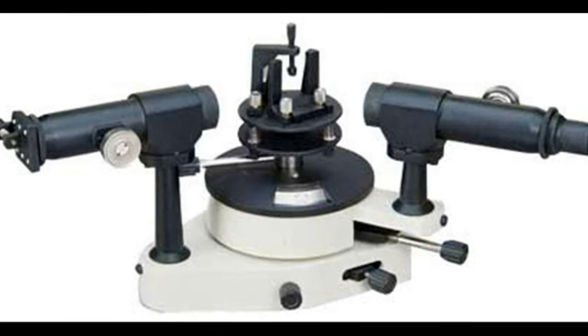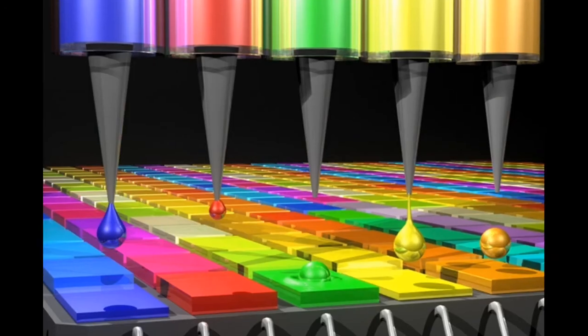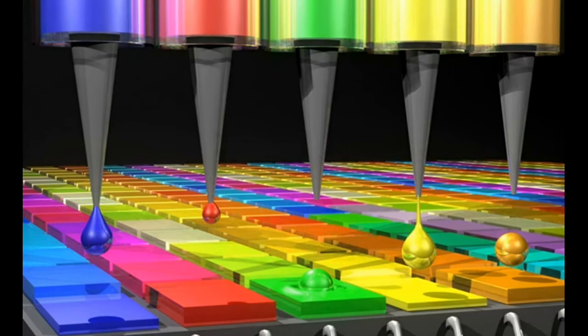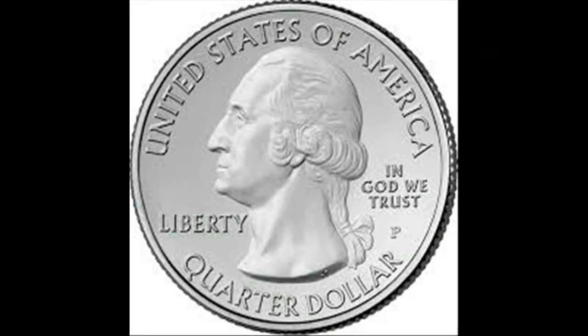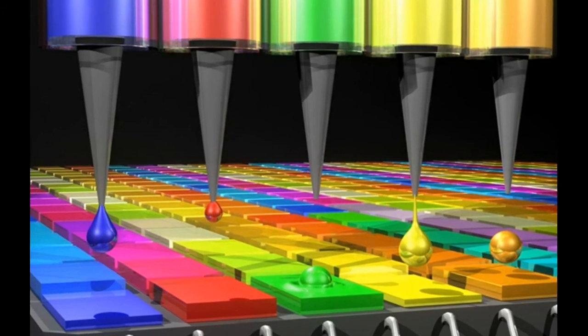Replacing that bulky optical equipment with quantum dots allowed the MIT team to shrink spectrometers to about the size of a U.S. quarter, and to take advantage of some of the inherent useful properties of quantum dots.